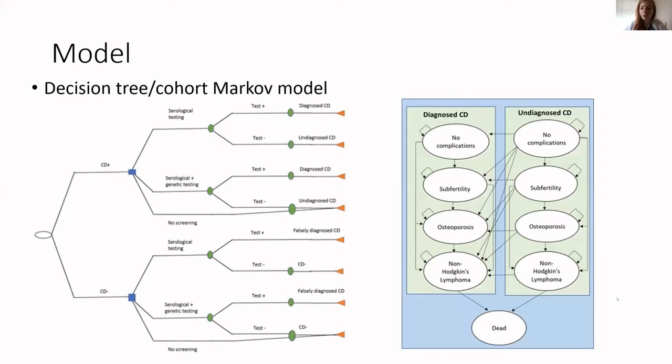And this is what the model looked like. It's kind of your standard decision tree slash cohort Markov model. The decision tree had identified people who had celiac disease or did not have celiac disease, and after testing how these people would be categorized into truly diagnosed or falsely diagnosed, and also false negatives and true negatives. We then modeled anyone with celiac disease, whether they were diagnosed or still undiagnosed in a longer term Markov model. And patients could either have no complications or develop things like subfertility, osteoporosis, and non-Hodgkin's lymphoma. The transition probabilities between these health states were both age dependent and dependent on whether patients were diagnosed or not.